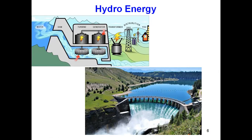Mostly we convert hydro energy to electrical energy because it is easy to transport electricity via cables from one place to another. Mechanical transfer of energy over long distances is not feasible, so the practical solution is to convert the mechanical energy produced by the turbine into electrical energy.